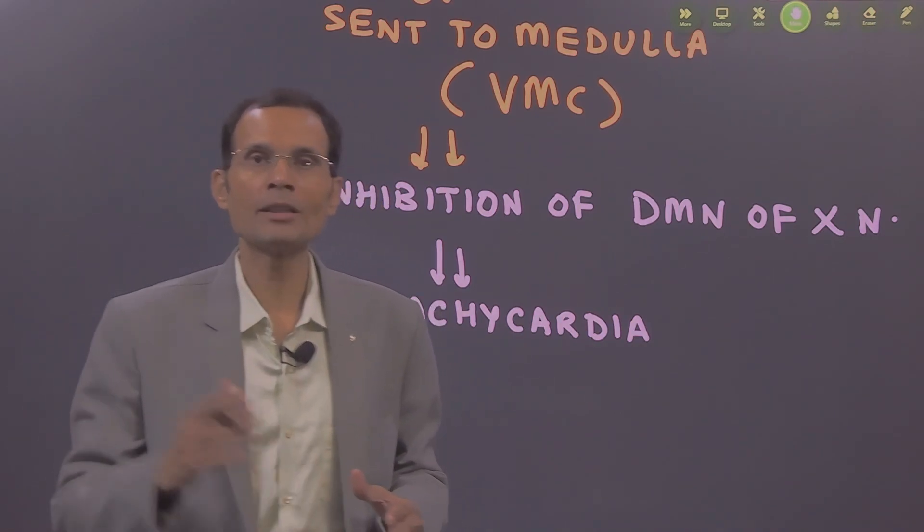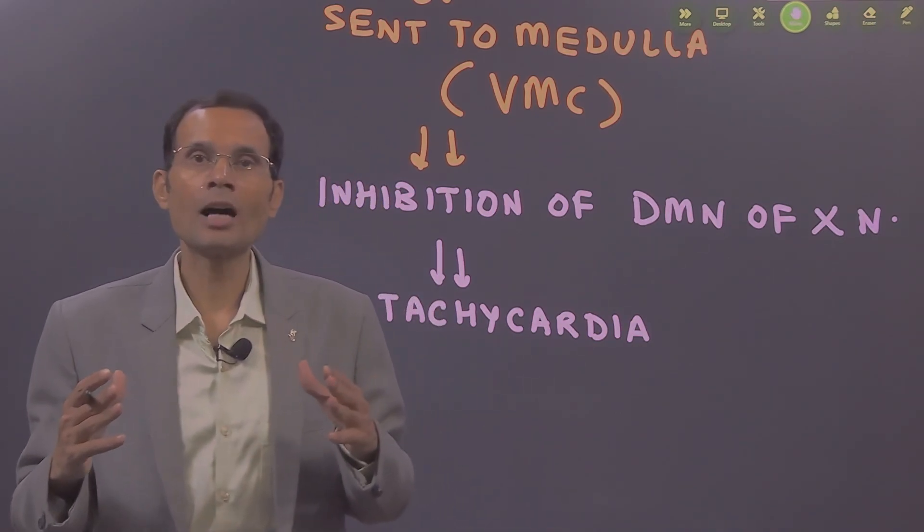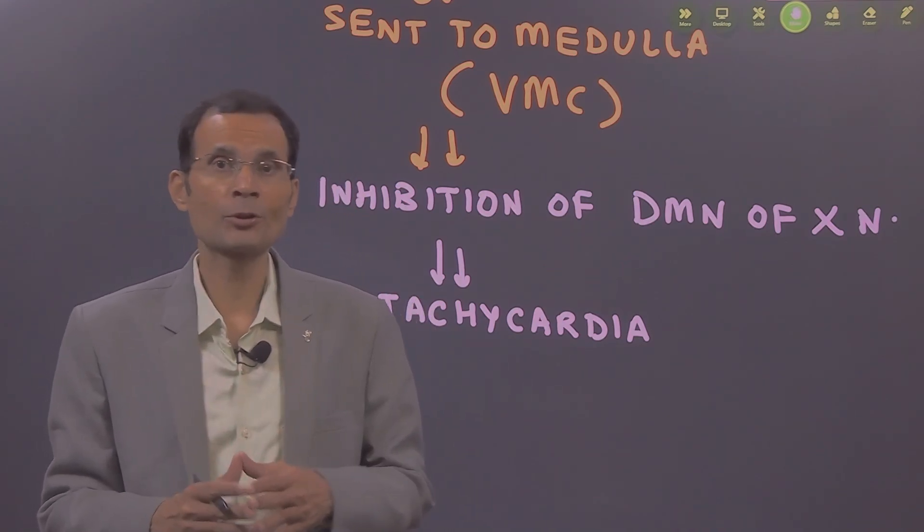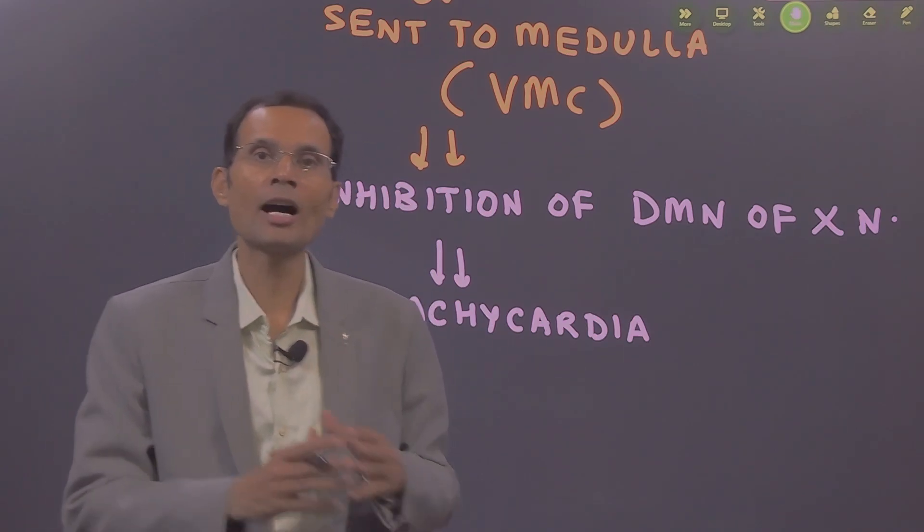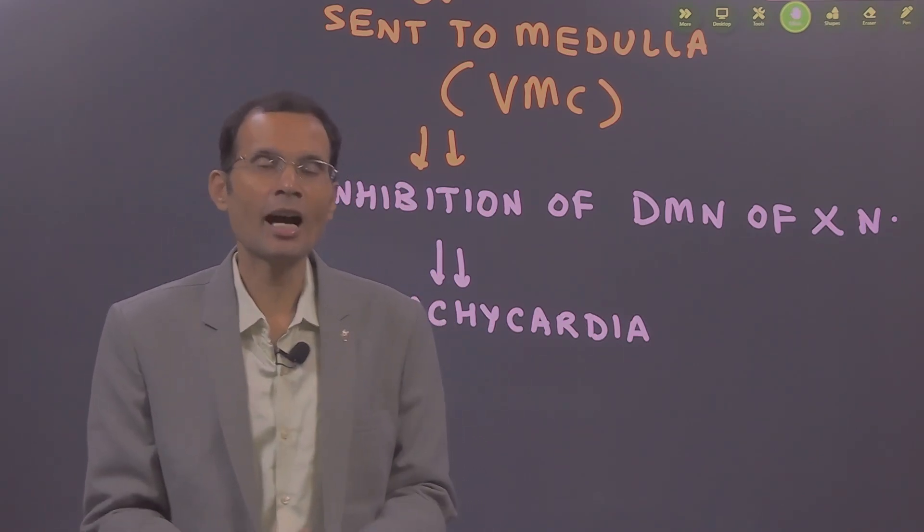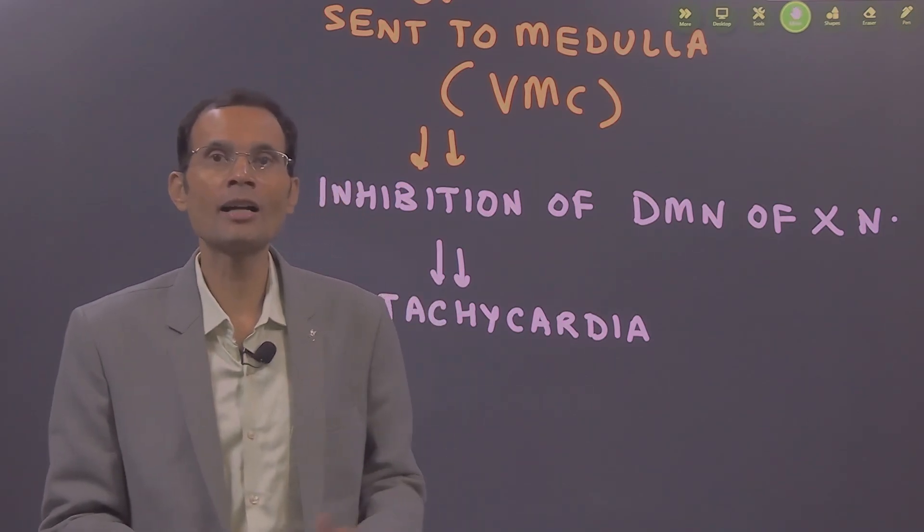Vagal motor fibers, the efferent fibers, are inhibited. These fibers go to the heart. The vagus is a parasympathetic nerve that is inhibitory to the heart. If it is inhibited, the inhibitory signals stop going to the heart, which means there will be excitation via sympathetic fibers.